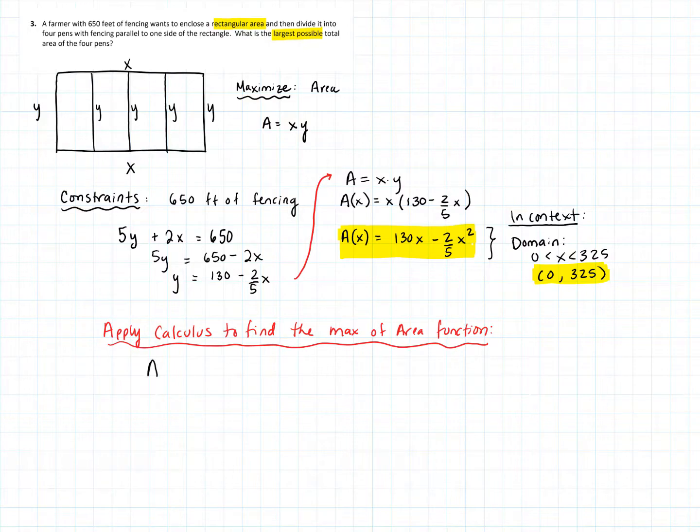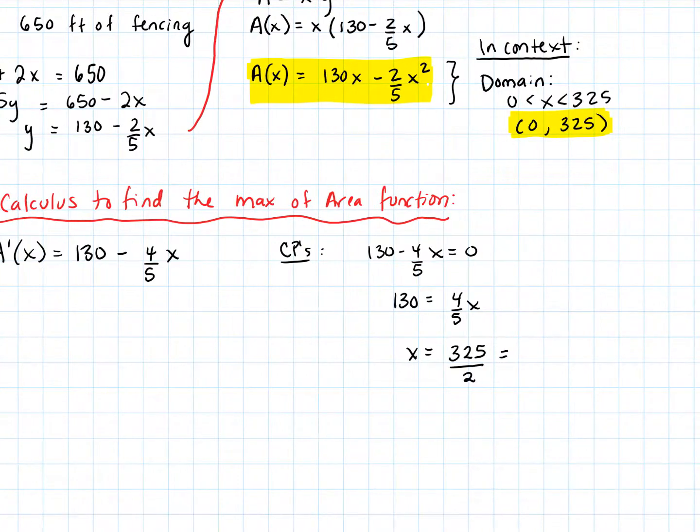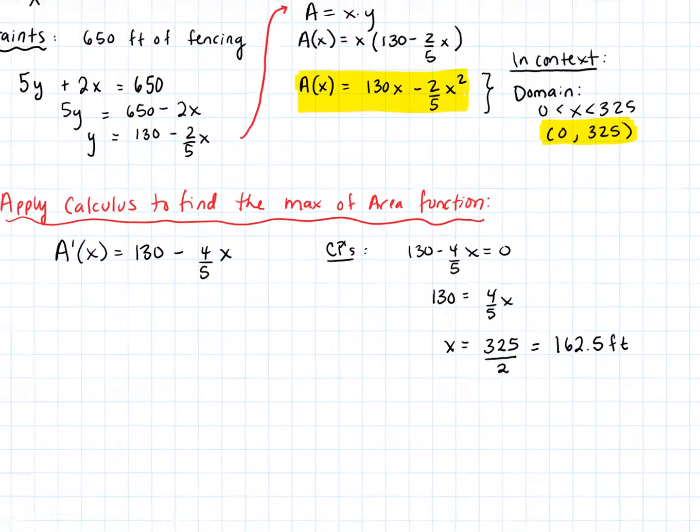So now let's take the derivative. So to find the maxes or the mins of a function, we take the derivative and look at the critical points. And so what is the derivative of this area function? It is going to be 130 minus four-fifths X. And then we've got to find the critical points. And there's just going to be one critical point. When 130 minus four-fifths X equals zero. So when four-fifths X equals 130 or when X equals 325 over 2, which is actually 162.5 feet of fence. So that's our critical point.